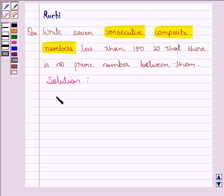So we have to find out consecutive composite numbers less than 100. So these numbers are 90, 91, 92, 93, 94, 95 and 96.